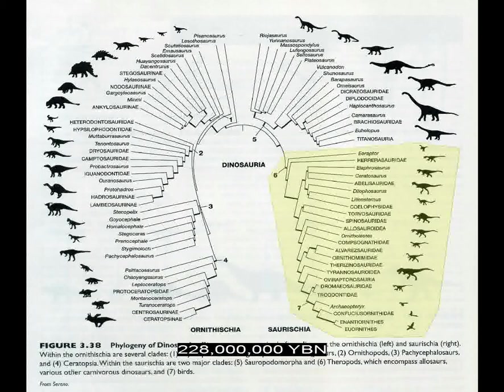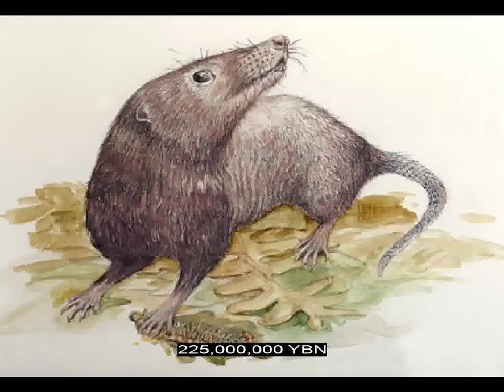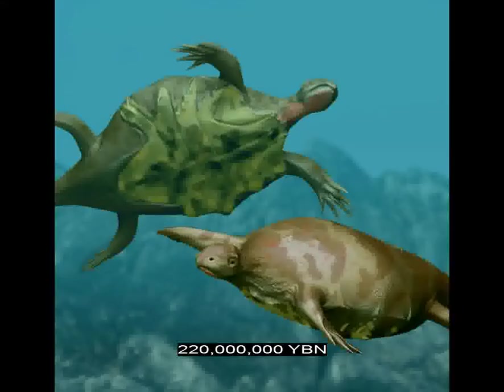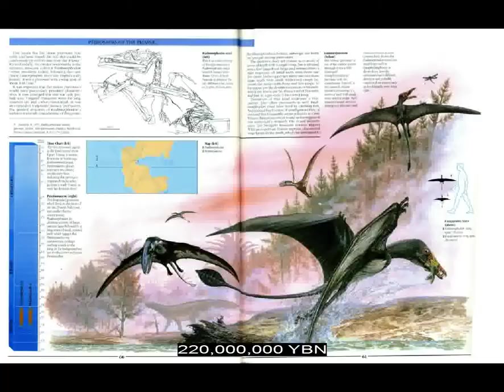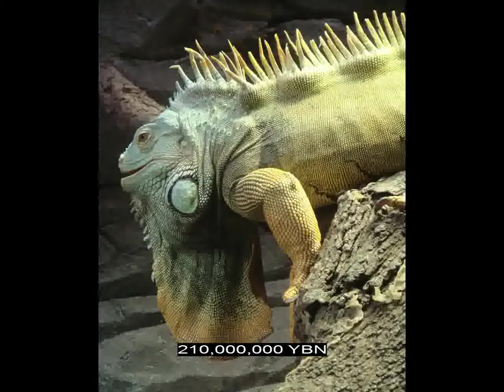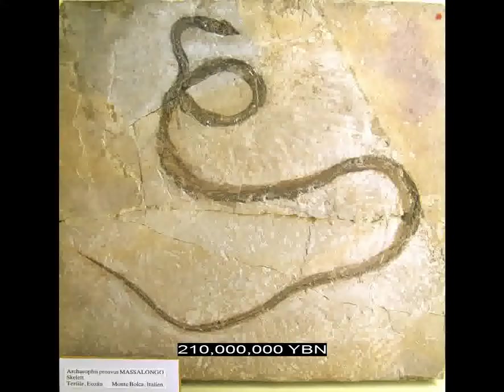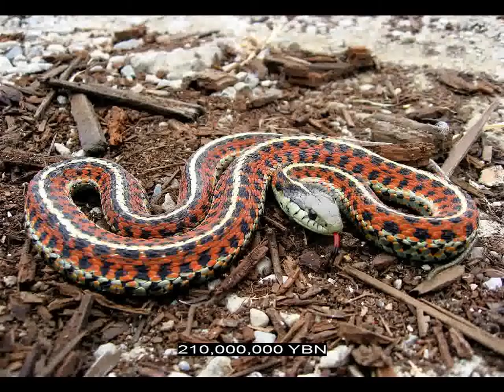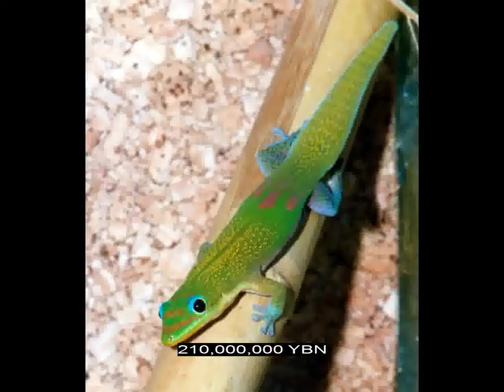Mammals evolve — first nipple, mammary gland, and breast. Ancestor of all ray-finned teleost fishes evolve. Reptiles Testudines — turtles, tortoises, and terrapins. The first flying vertebrate — pterosaur. Reptiles Iguania evolve — iguanas, chameleons, and spiny lizards. Reptiles Scleroglossa evolve — snakes, skinks, and geckos. Teleosts — bony tongues.